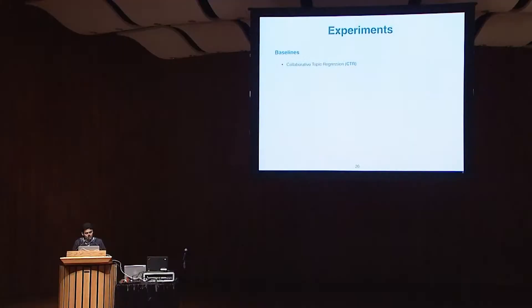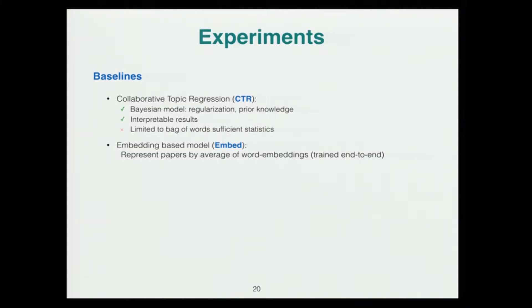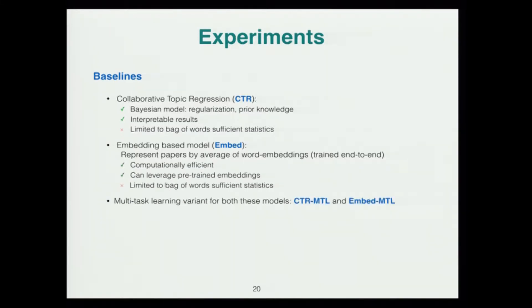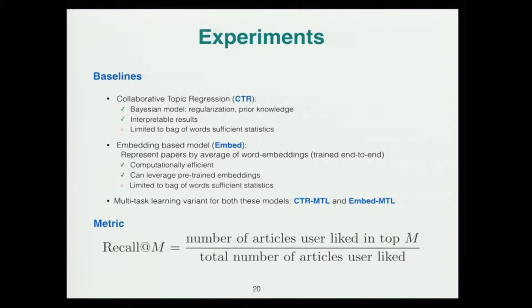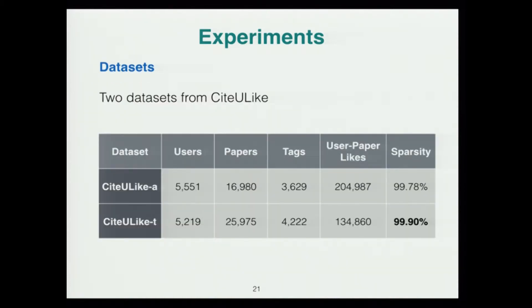Let me now describe the experimental results. Baselines include collaborative topic regression, a state-of-the-art model for research paper recommendation, and a simple linear model representing each paper as the sum of word embeddings trained for recommendation. We also implemented multitask learning variants of both baselines for fair comparison. The metric is recall at M: the fraction of papers actually liked by users in the top M recommended papers. We used two publicly available datasets from CiteULike, an online site where users create personal libraries and can provide tags to papers. The datasets have different sparsity statistics; one has less than 0.1% of entries observed. We do five-fold cross-validation.